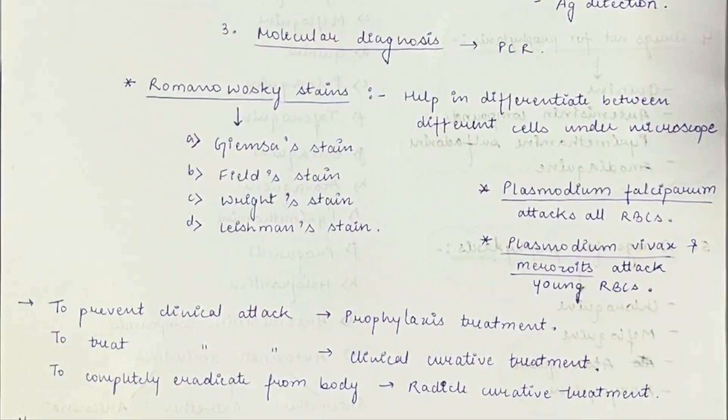There are four Romanovsky stains: Giemsa stain, Field stain, Leike stain, and Leishman stain. Make sure you must have heard about Leishman stain. If all the RBCs are attacked, it is due to Plasmodium falciparum. If only young RBCs are attacked by those merozoites, it is due to Plasmodium vivax.